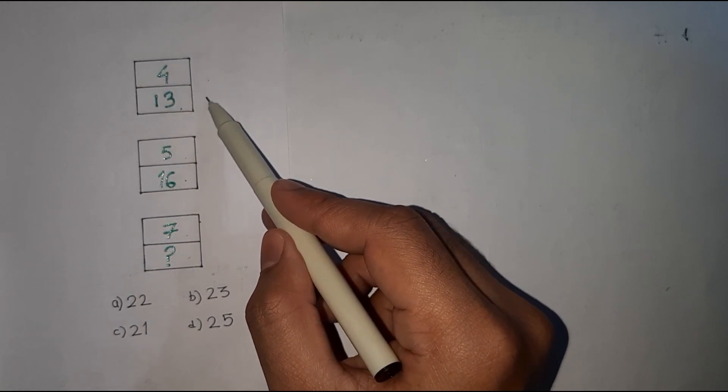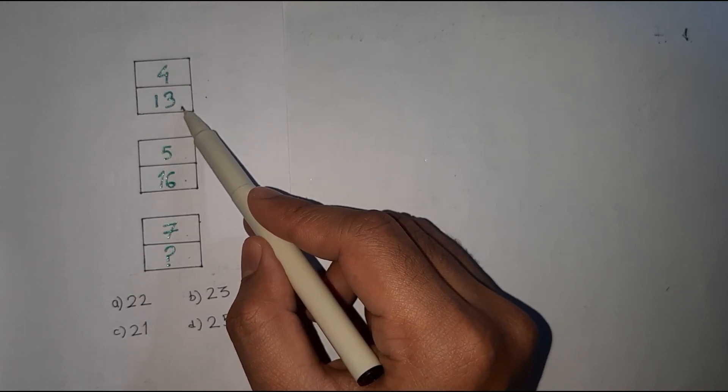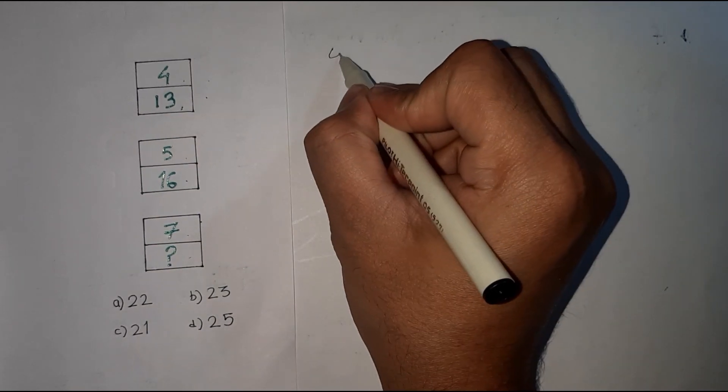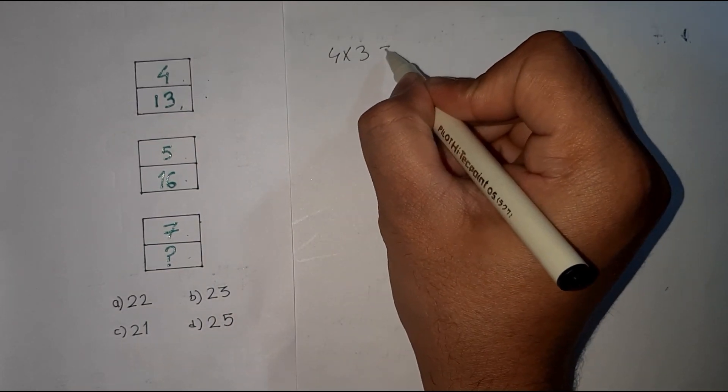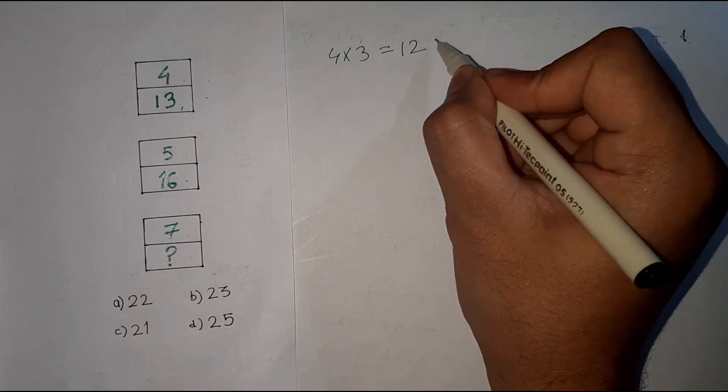with 3, we get 12, but here is 13. So close to this: 4 into 3 we get 12, and to get 13 we are doing plus 1.